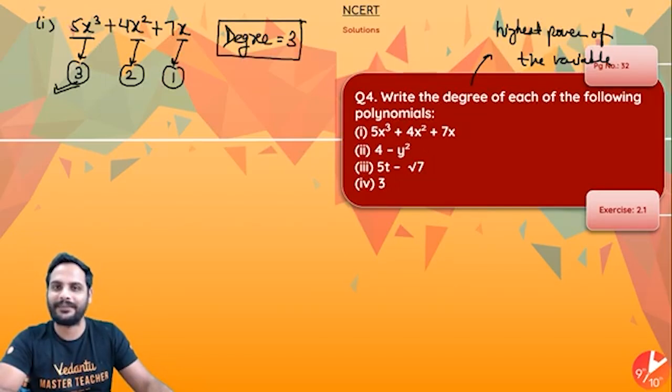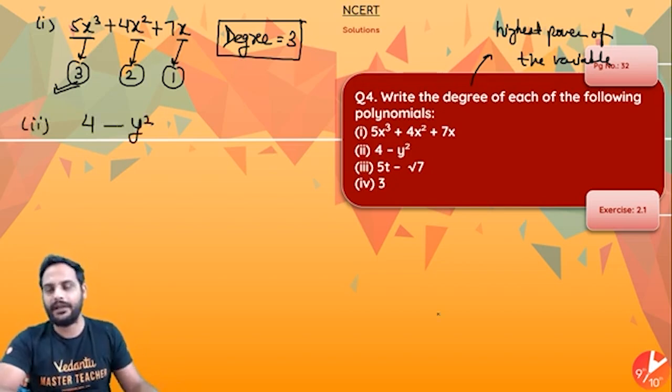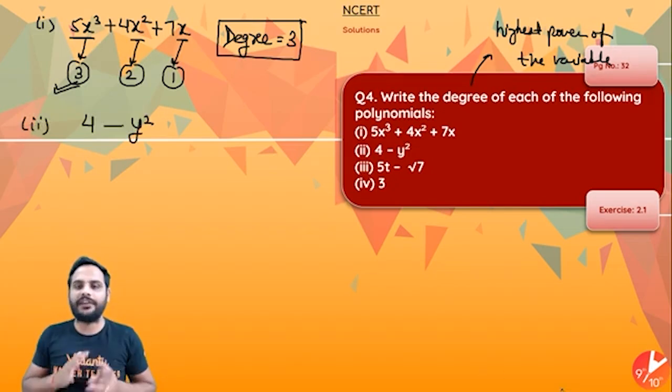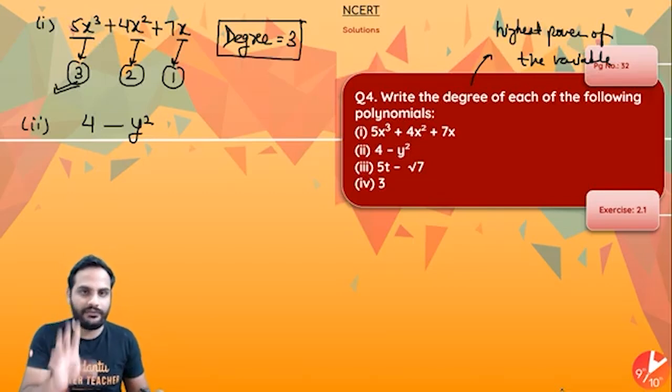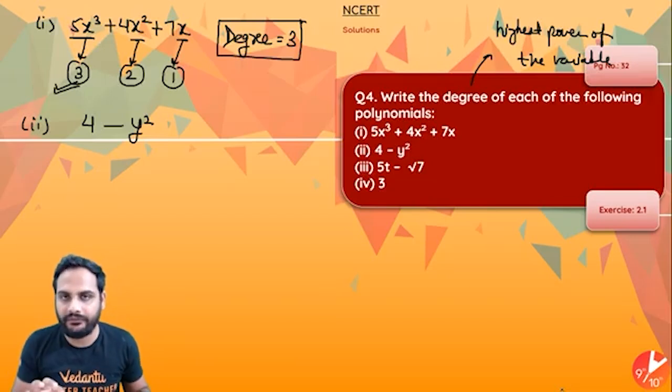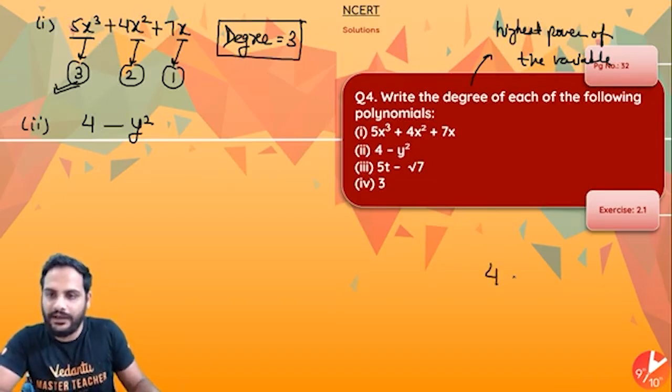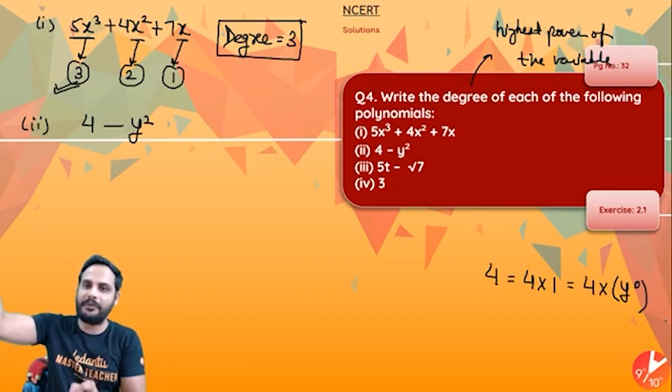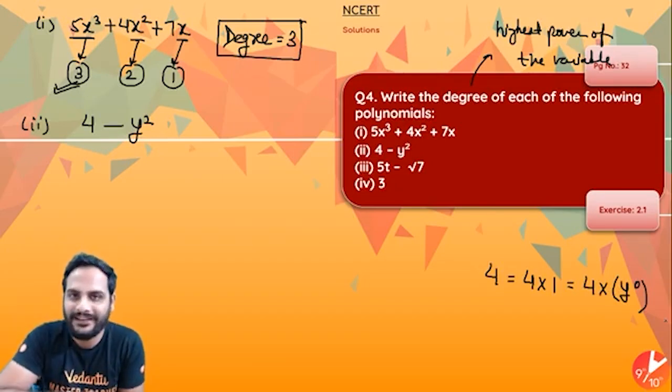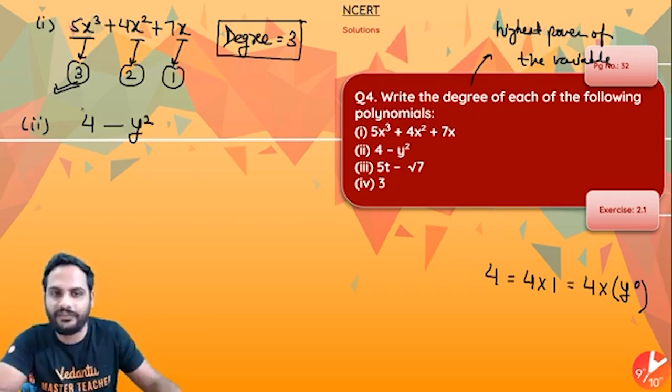Second one: 4 - y². Whenever there is a constant term, for example here you can see 4 is a constant term, no variable is written with it. Suppose 4, I can write 4 as 4 times 1, and 1 I can write as any variable, suppose variable here is y, so I can write it as y raised to power 0.